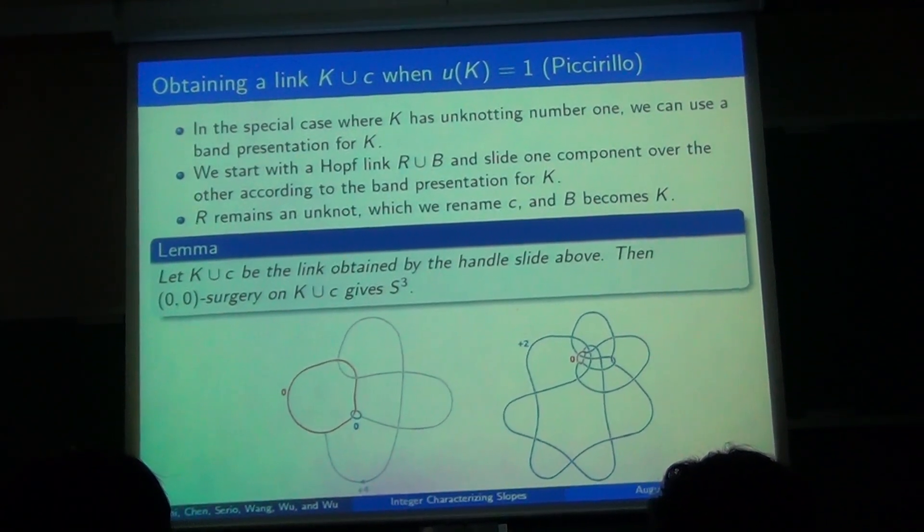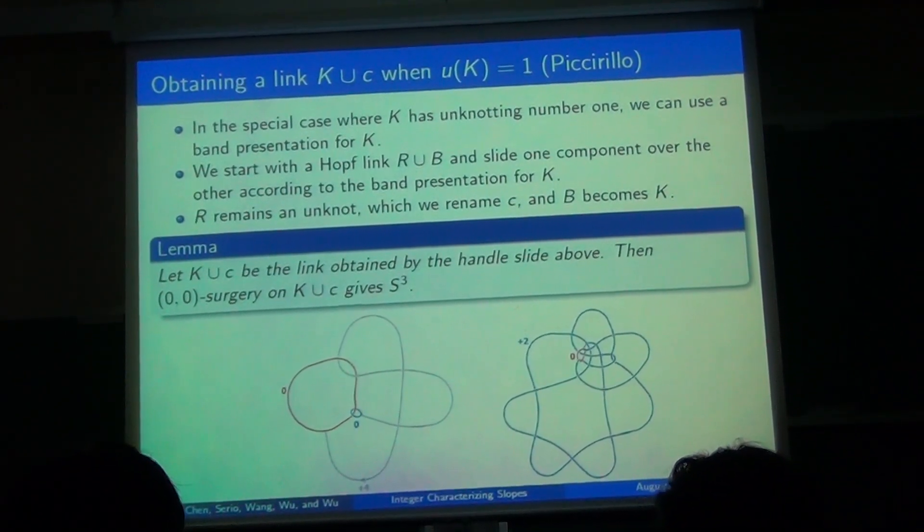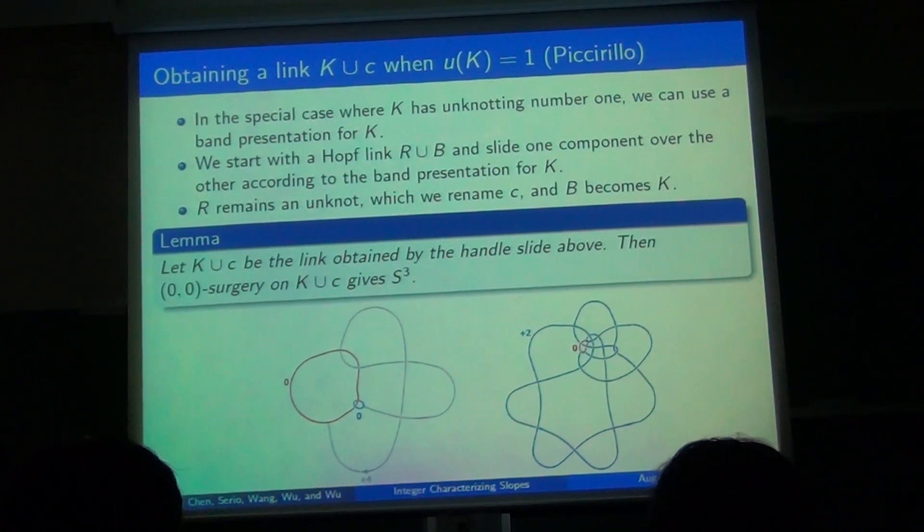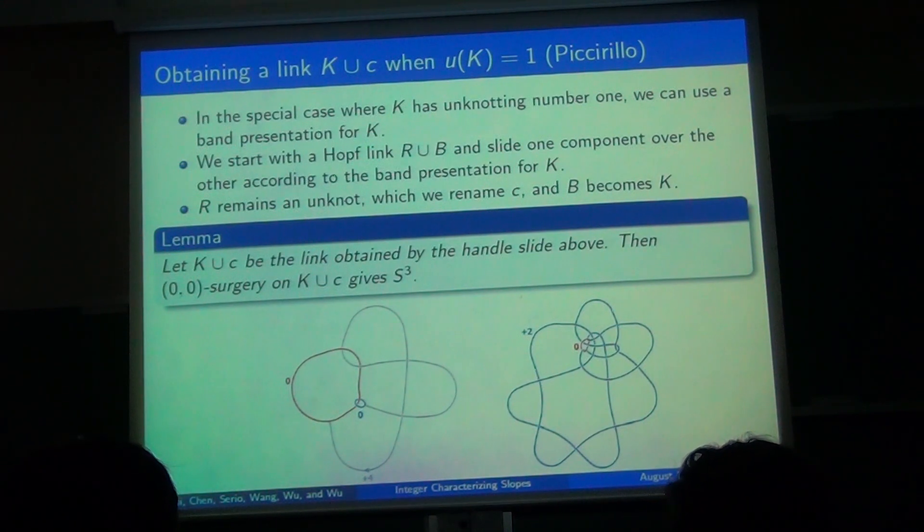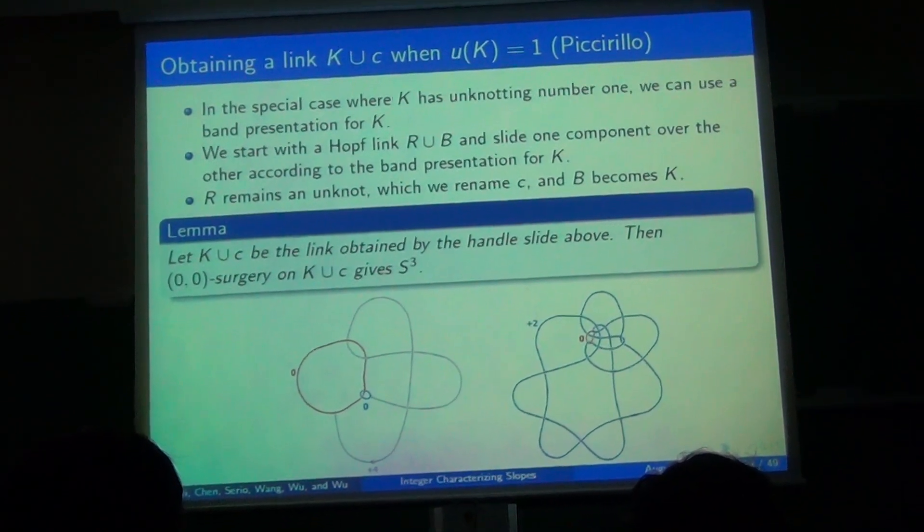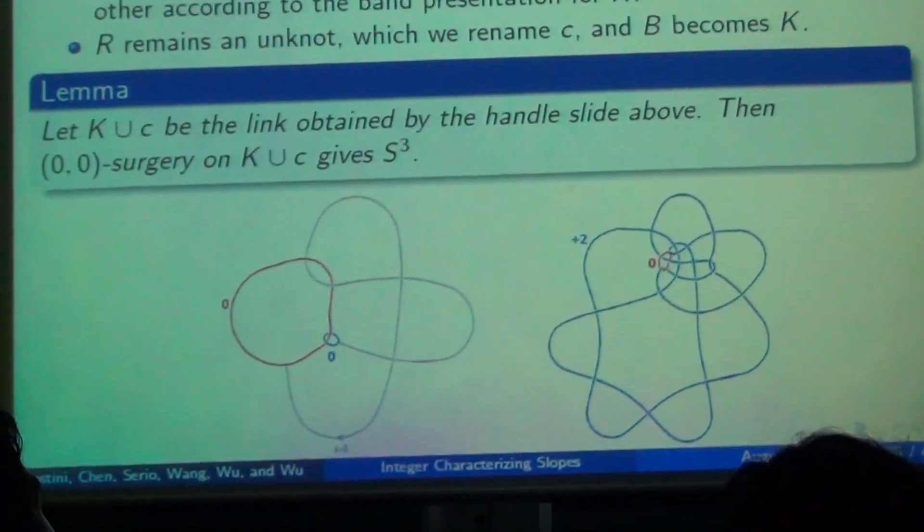So now we want to be able to produce these links K union C in certain practical circumstances to work with individual knots. If K has unknotting number one, there's a method that we originally got from a paper by Piccirillo, and we used the band presentation. So if you take a hoplink and slide one component over the other using the band as an instruction, then one component is going to remain the zero-framed unknot. That's the red in the diagram on the bottom. The blue will become the knot K by construction. And notice the framing on K is plus or minus two, but if we adjust the initial framing on the hoplink to minus two with the opposite sign, at the end we're going to get a zero-zero framing.